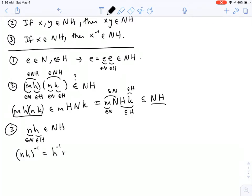So this is h inverse, n inverse. And I know that the h inverse is still an element of H, because H is a subgroup, and n inverse is still an element of N. So this is an element of HN. But again, because N is normal, this is equal to N times H. And so in total, the inverse element, NH inverse, is an element of NH. And this proves that NH is a subgroup of G.